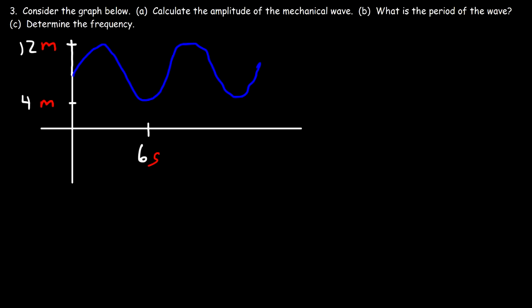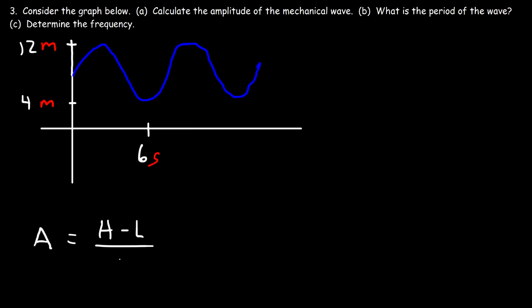Here's another example. Calculate the amplitude of this particular mechanical wave. To calculate the amplitude, it's going to be the difference between the highest value and the lowest value divided by 2. So it's going to be 12 minus 4 divided by 2. 12 minus 4 is 8, and 8 divided by 2 is 4. So the amplitude in this example is 4 meters.